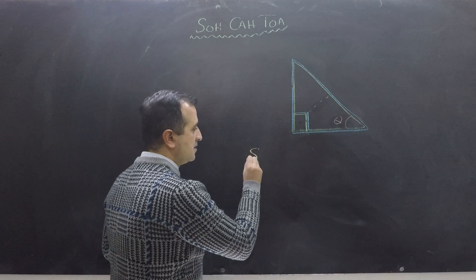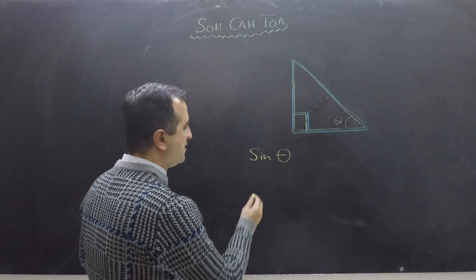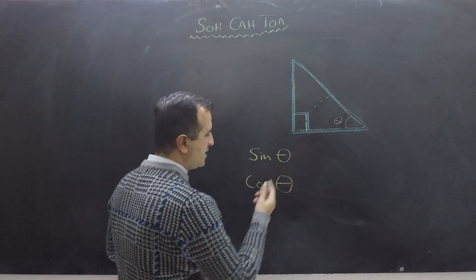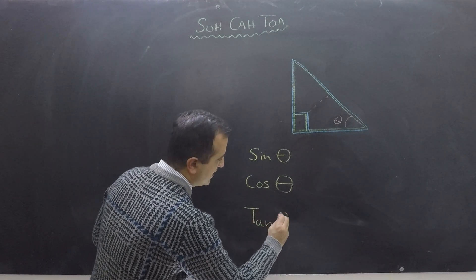One function is called sine. This function takes theta as its parameter. Second function is cos, takes theta as parameter. Theta is an angle. And third function is tan, theta is its parameter.